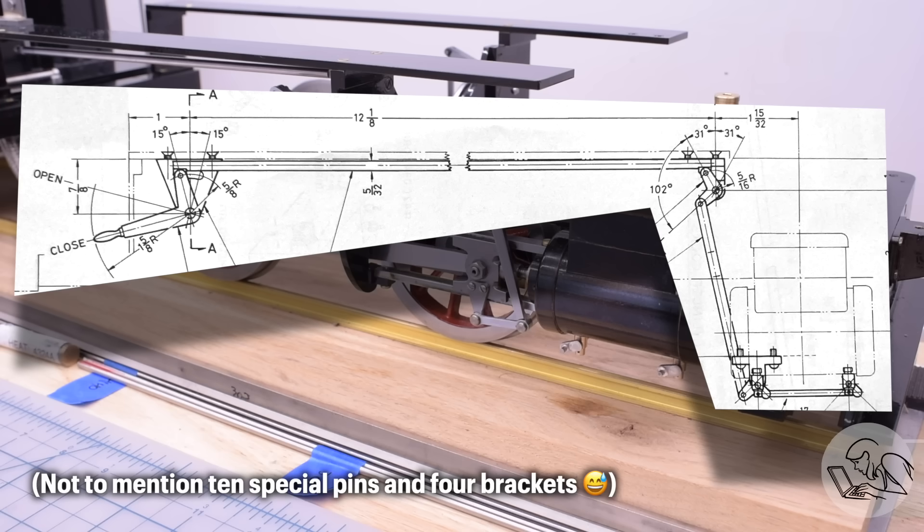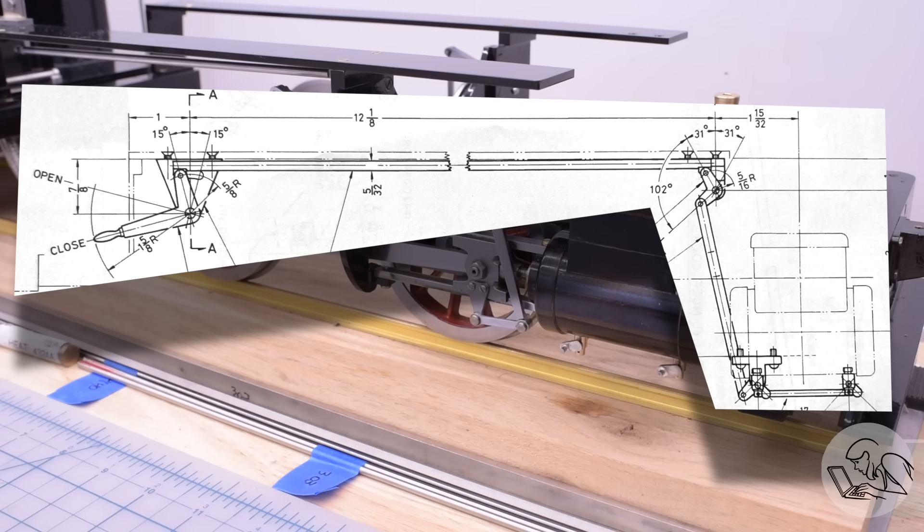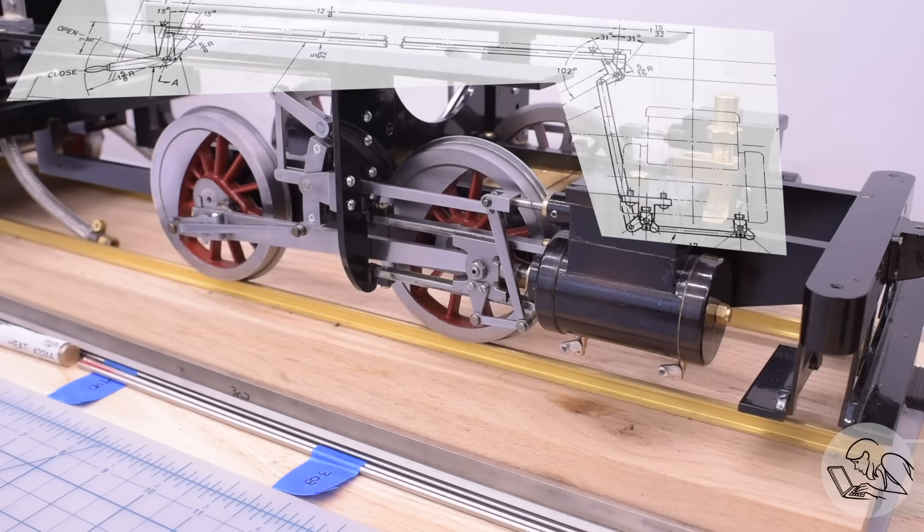Larger and later locomotives tended to use compressed air or steam to operate the drain valves which converts all of this into a plumbing problem which is a lot simpler. But this is an early and a small locomotive so it is all mechanical. These linkages land roughly here on my actual model to give you a sense of what we're going to be building. This is almost certainly the second most complicated mechanical assembly after the valve gear itself on the entire locomotive.